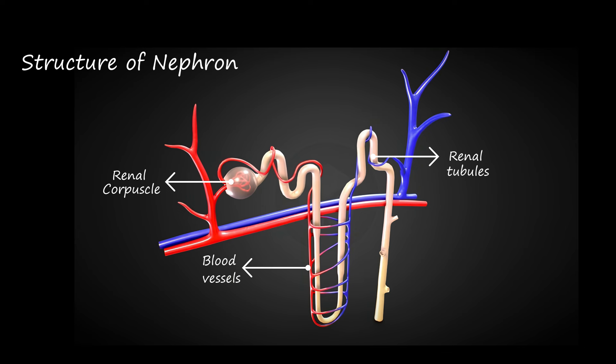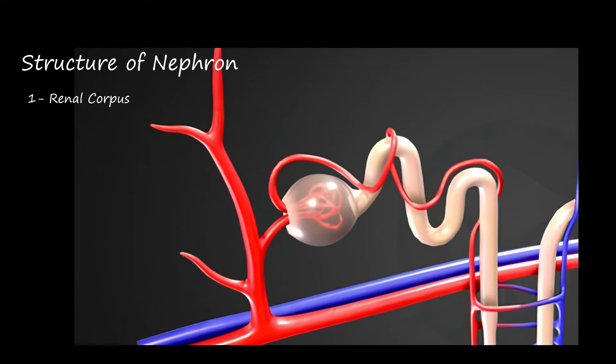Let's take a closer look. The renal corpuscle is where it all begins, with a network of capillaries encased in Bowman's capsule. Here, blood filtration takes place, initiating the journey of urine formation.